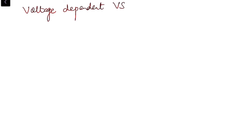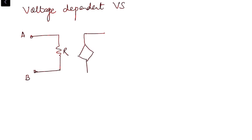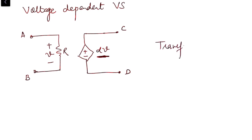For a voltage dependent voltage source, we have a circuit element — say resistance R — connected across terminals A and B. Then we have a dependent voltage source whose voltage is alpha times V, where V is the voltage across resistance R, connected between terminals C and D. Any change in the circuit will impact voltage V and that will be reflected in the output of the source. The best example of a voltage dependent voltage source is a transformer — if we change the primary side voltage, it gets reflected on the secondary side.